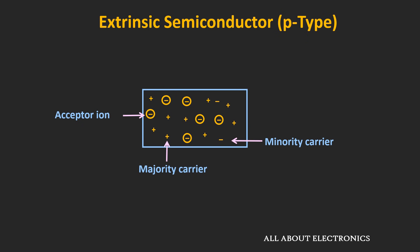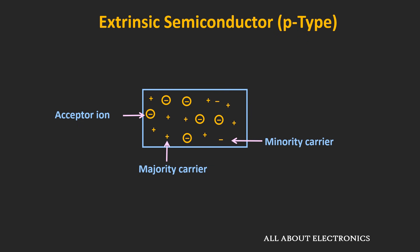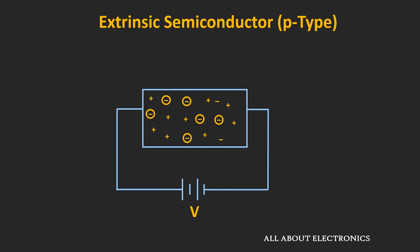In a p-type semiconductor there is an excessive number of holes, while in an n-type semiconductor there is an excessive number of electrons. In an n-type semiconductor, electrons are the majority carriers while holes are the minority carriers. In a p-type semiconductor, holes are the majority carriers and electrons are the minority carriers — so when voltage is applied to a p-type semiconductor, the majority of the current comes from holes. Holes get attracted toward the negative terminal and electrons toward the positive terminal, but since there are fewer electrons the majority of current is due to holes.